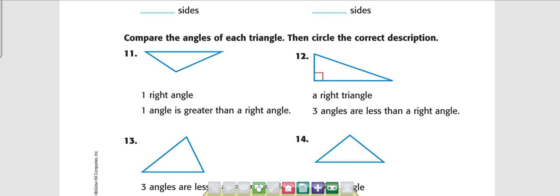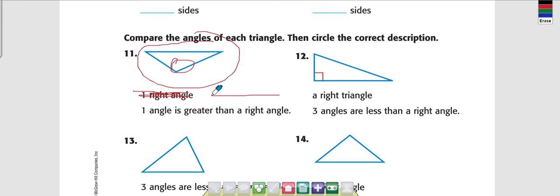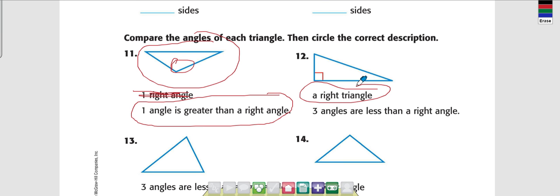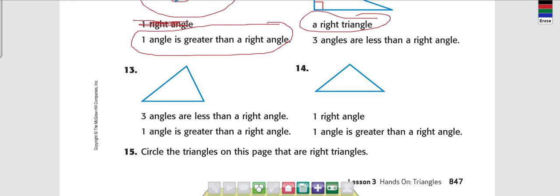Look at number 11. Does it have one right angle? Do you see the little square box? No. Is there an angle greater than a right angle in one of these corners? Yes — this one right here. So this would be correct. Now look at the next one — does it have a right angle? Yes, it does. Are all three angles less than a right angle? No — one of them is equal to a right angle.